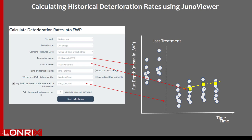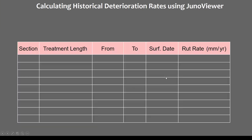If you specify a shorter time period, such as a three-year period, then JunoViewer would only go back that specified period of time or to the last treatment, whichever comes first.